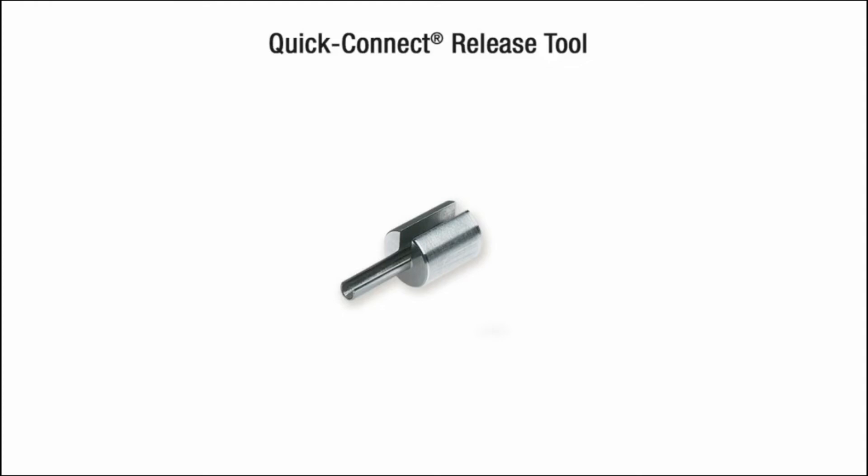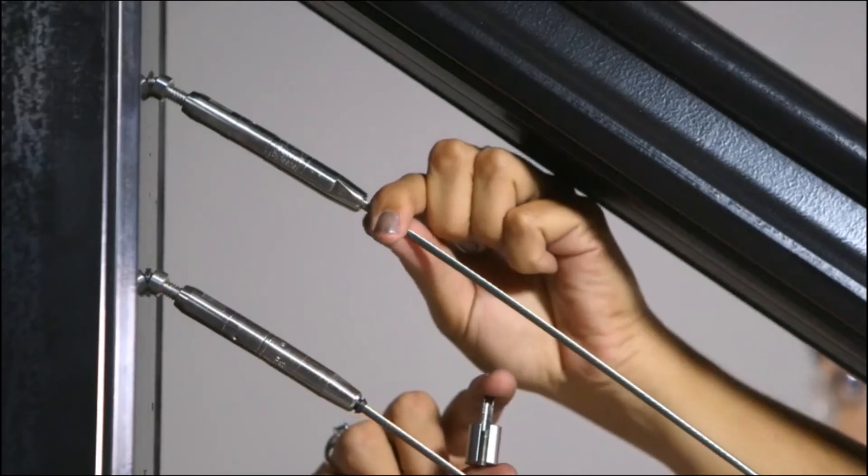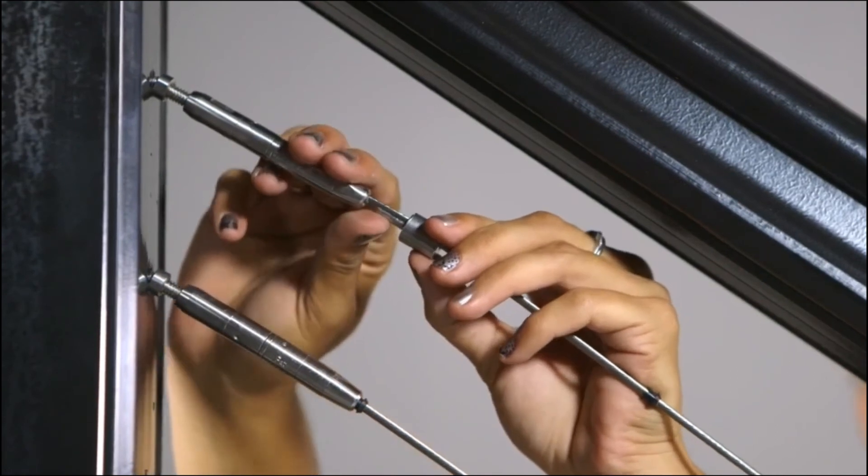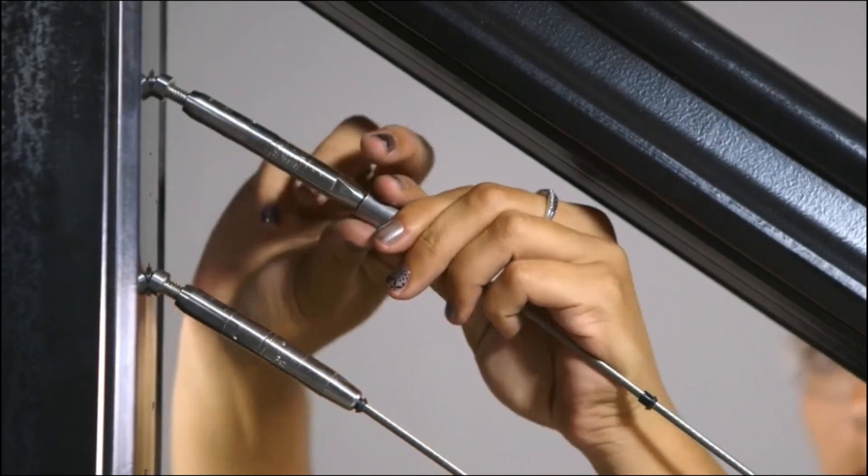If your cables are still loose after tensioning, don't panic. You can disengage the Quick Connect jaws using our Quick Connect release tool. Slide off the rubber protector seal, then slide the release tool into the fitting. Pull the cable free and trim as needed.